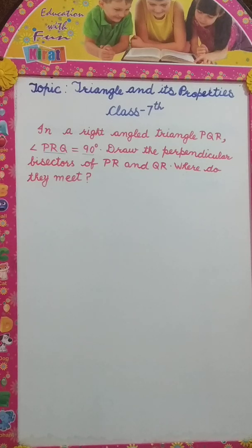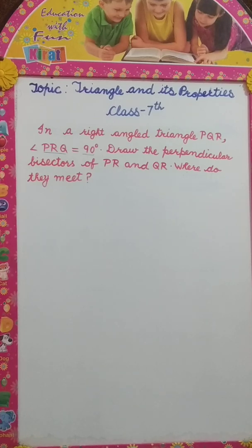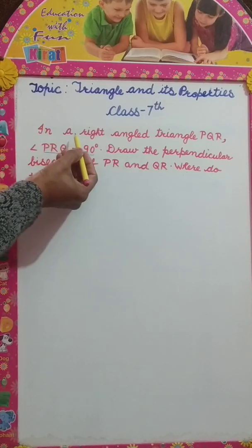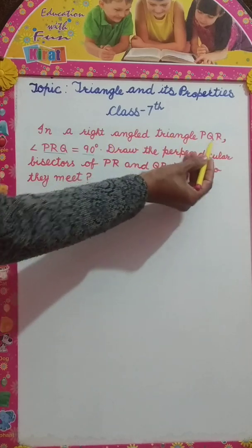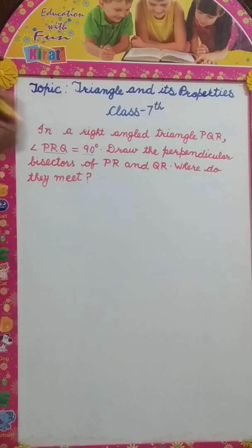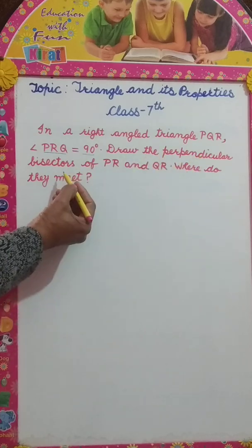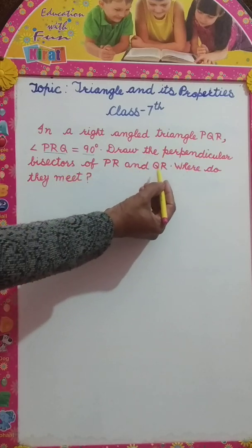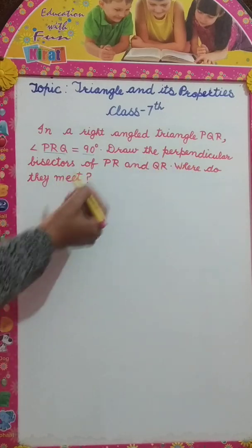Hello guys, welcome back with another video on topic triangle and its properties for class 7. Our question is, in a right angled triangle PQR, angle PRQ is equal to 90 degree, draw the perpendicular bisector of PR and QR, where do they meet?